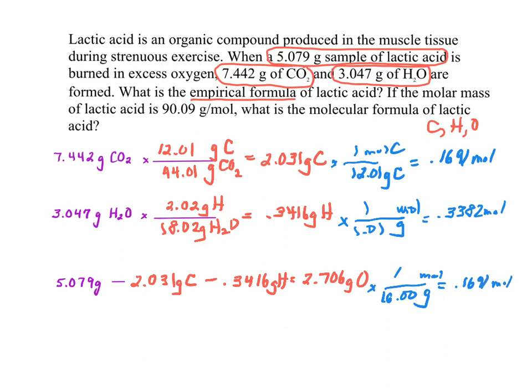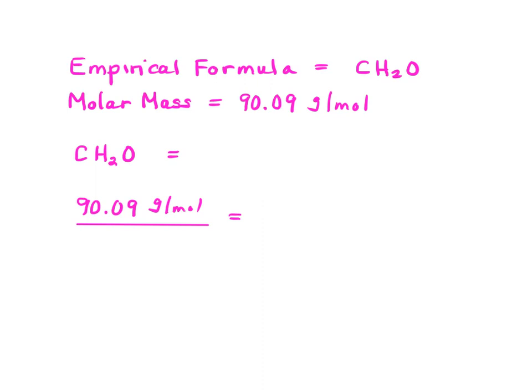Now, all I have to do is find the smallest number. I divide them all by the smallest number. This is 1. This is 2. This is 1. So my empirical formula is CH2O. So now I've got my empirical formula as CH2O.